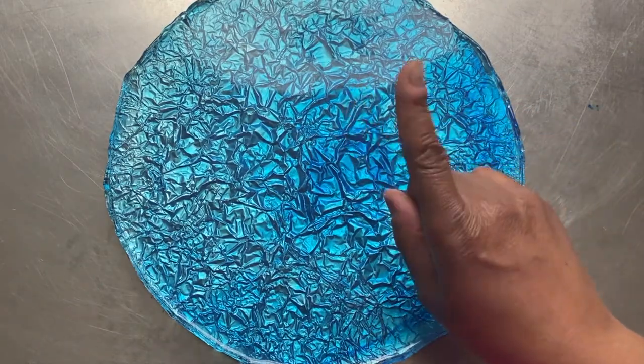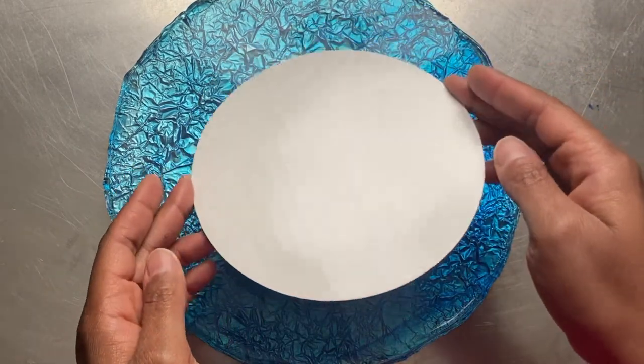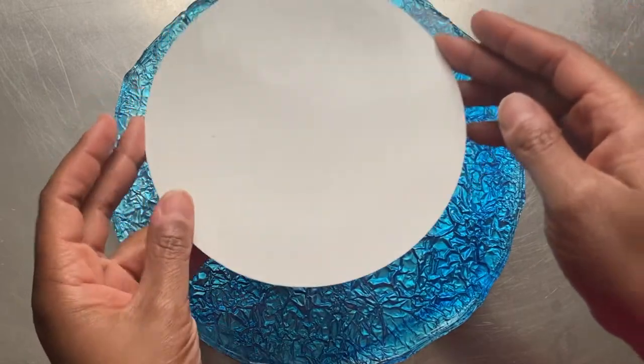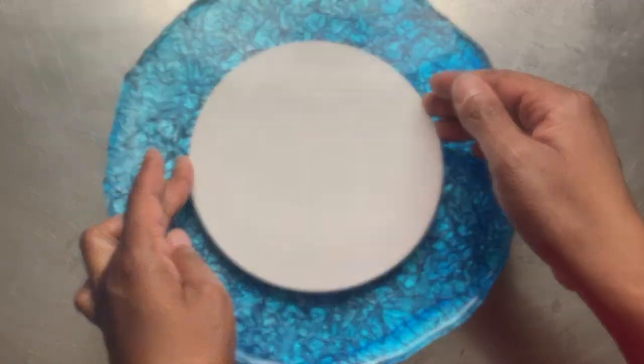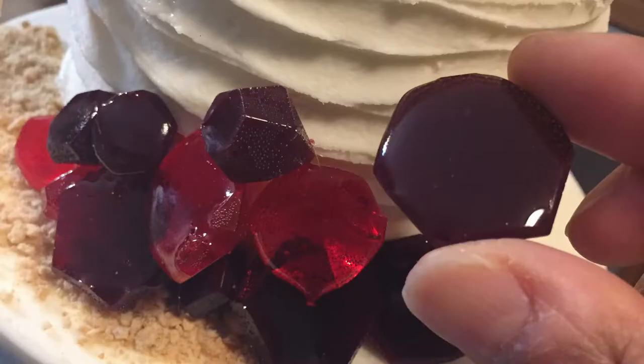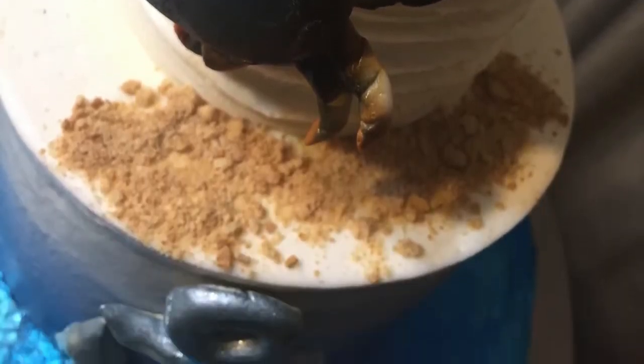Never set a bare cake directly onto this isomalt base. Make sure that your cake is on a cake board before placing it onto the base. I created a water effect base for my son's birthday cake in addition to molding some isomalt gemstones. I was really happy with the overall look of this cake.